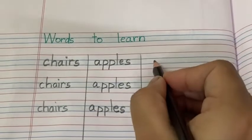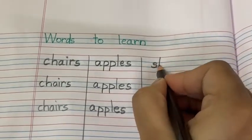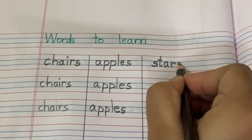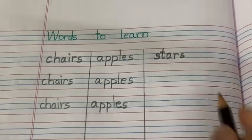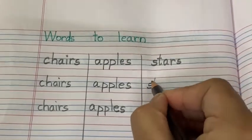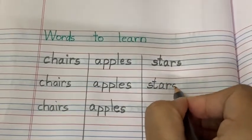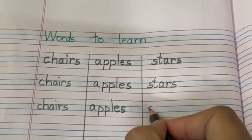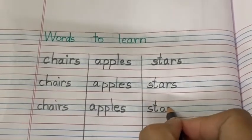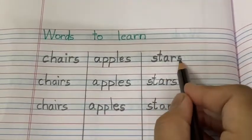Next one. Stars. Stars. St. S, T. St. R. A, R, R. Letter S. Stars. One more time. S, T. St. R. A, R, R. S. Stars. One more time. S, T. St. R. A, R, R, S. Stars. S, T, A, R, S. Stars.